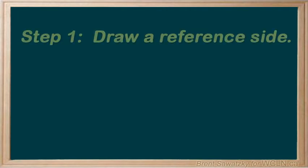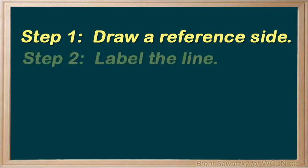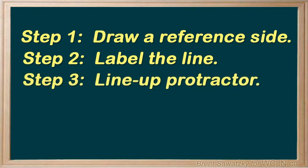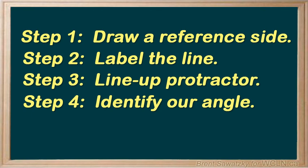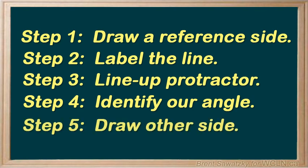In this tutorial, we looked at how to draw an angle using a protractor. Let's review our steps. Step 1: Draw a reference side for our angle. Step 2: Label our line — mark the vertex, then mark another point on our reference side. Step 3: Line up the protractor with the midpoint on the vertex and the zero line on our reference side. Step 4: With the protractor in place, identify the angle and make a mark. Step 5: Draw the remaining angle side from the vertex through the new dot, and we have our angle.